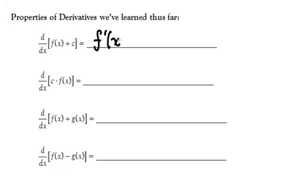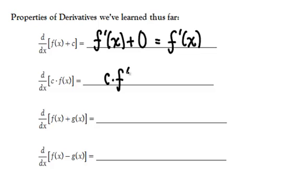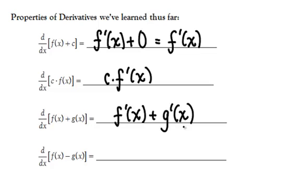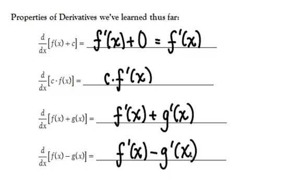If I have a function plus a constant, the derivative of that is going to be the derivative of the function plus 0, because the derivative of the constant is 0 — therefore that's just f prime of x. If I have the derivative of a coefficient times the function, that's going to be the coefficient times f prime. If I have the derivative of the sum of two functions, it's the sum of the individual derivatives. And if I have the derivative of the difference of two functions, the derivative is equal to the difference of the two individual derivatives.